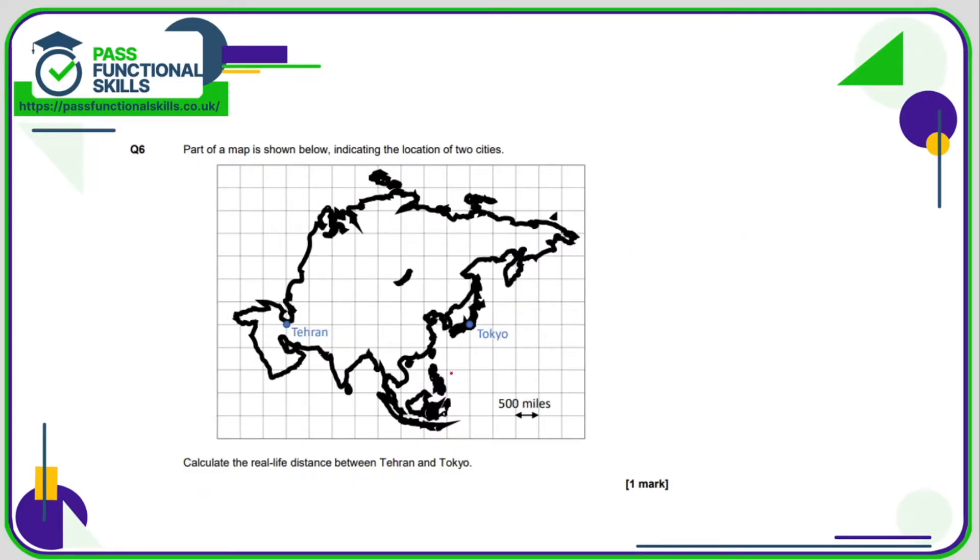Question number 6, each square is 500. We're not allowed to use a calculator, which is fine because 500 miles is a nice amount. Let's count the squares between Tehran and Tokyo: 1, 2, 3, 4, 5, 6, 7, 8. So 8 times 500, well 8 times 5 is 40. So 8 times 500 is going to be 40 with two more zeros. So that's 4,000 miles.